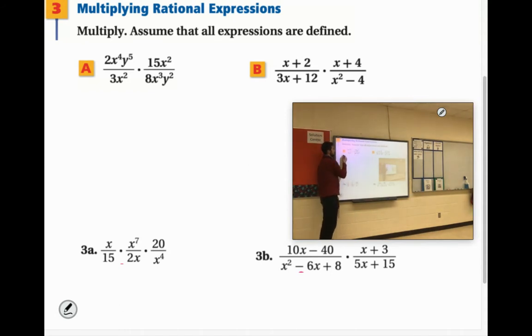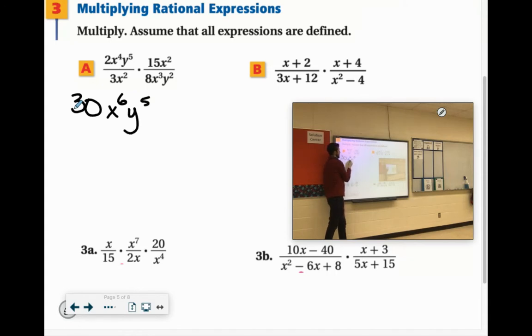Like 2 times 15 would be 30. You have x to the 4th times x squared, that would be x to the 6th, and y to the 5th. As far as the denominator, 3 times 8 is 24. You have x to the 5th and y squared.